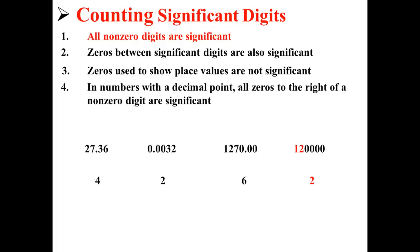Last, the number 120000 has two significant digits. This is, again, because all non-zero digits are significant, and zeros to show place value are not significant.